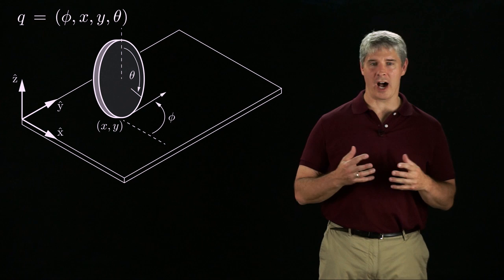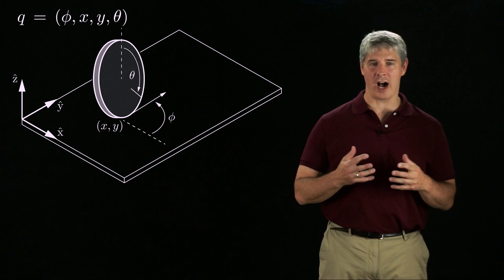Its configuration Q consists of the heading angle phi, the contact position xy, and the rolling angle theta. There are two controls driving the wheel: